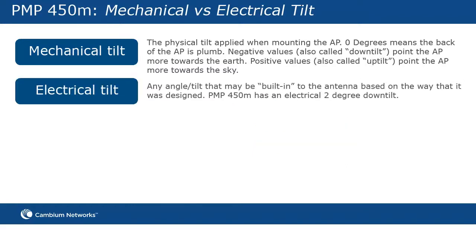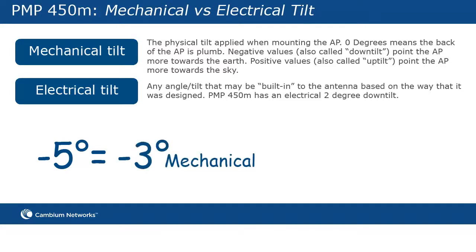Electrical tilt refers to any angle or tilt that may be built into the antenna based on the way it was designed. For example, PMP450M has an electrical 2-degree down tilt. When calculating the amount of mechanical tilt that is required, consider the electrical down tilt that is already incorporated into the antenna. If 5 degrees of down tilt is needed for the AP, then only 3 degrees of mechanical tilt is needed because 2 degrees of down tilt are already accounted for in the electrical down tilt of the antenna.